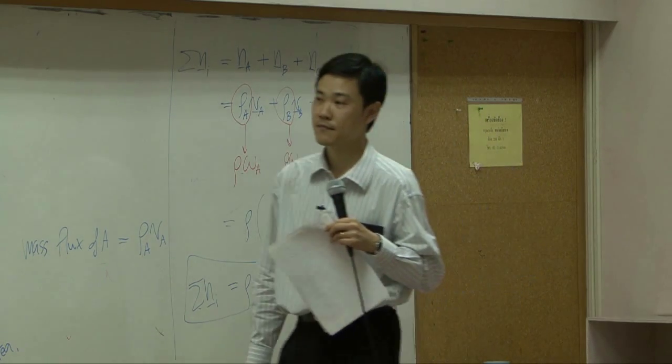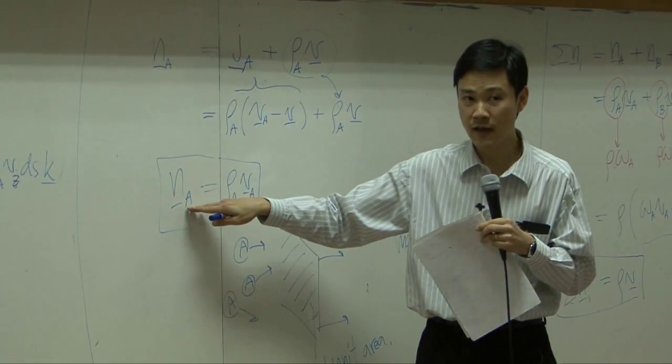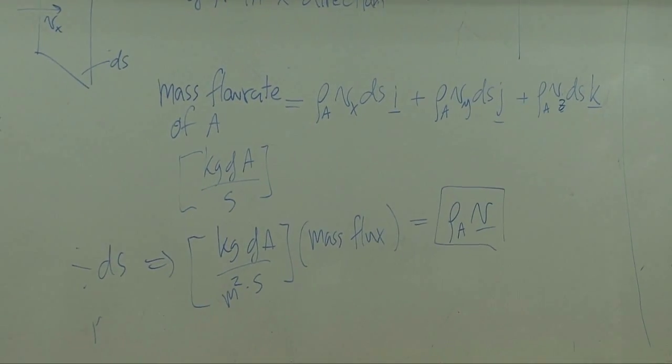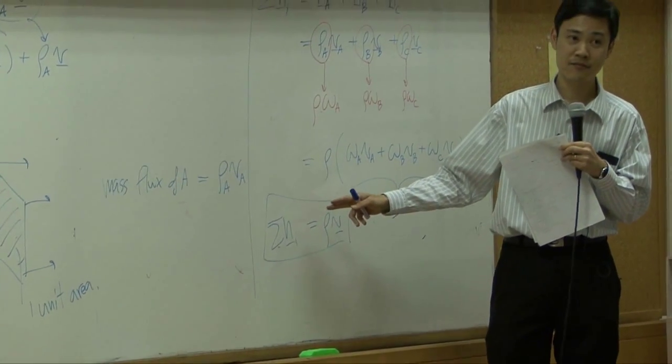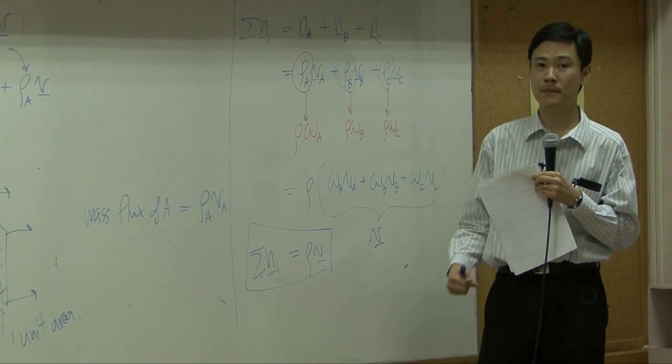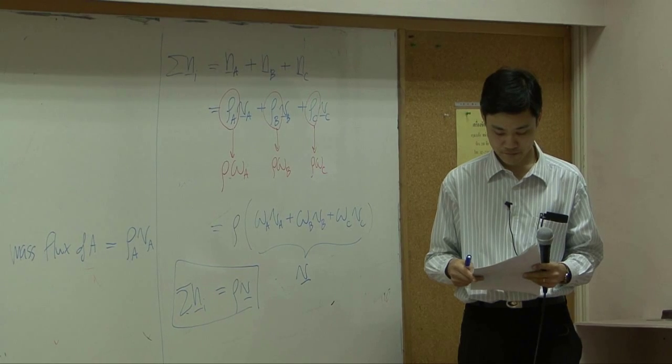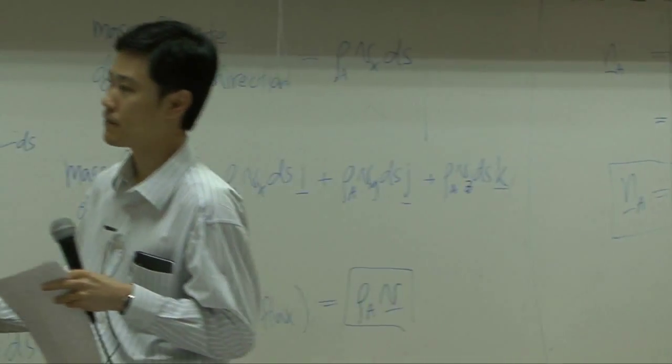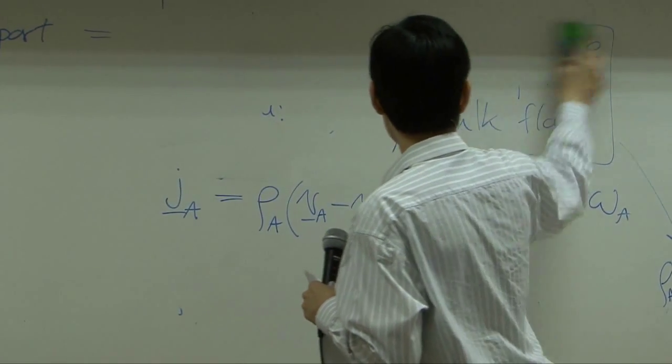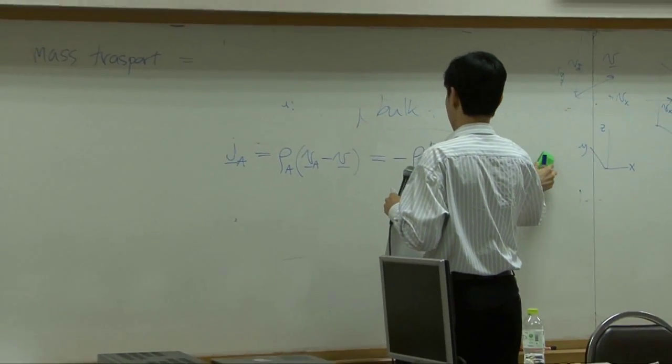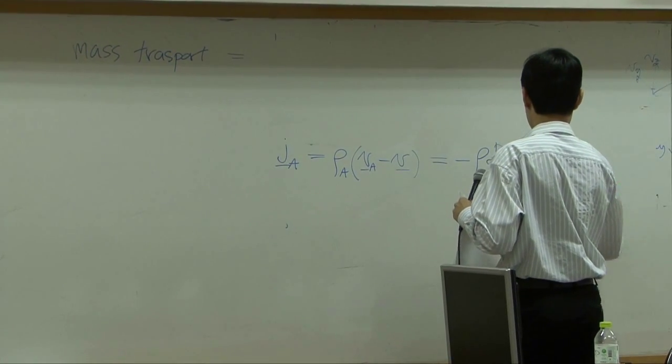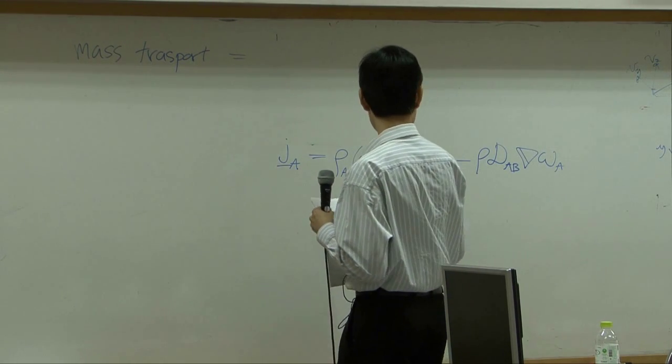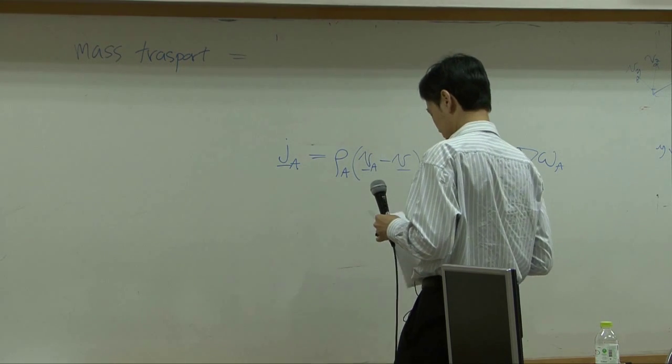So you need to understand rho A, VA is combined flux of A. Rho A, V is a convective flux of A. And rho V is a summation of combined flux.